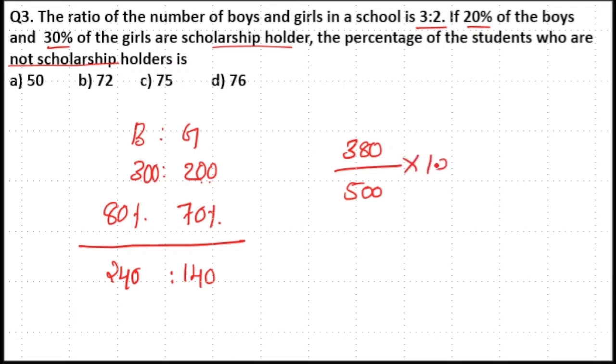So if you take the percentage into 100, that means the zeros cancel. 380 by 5, means 5 into 7 is 35, 30 by 5 is equal to 6, that is 76 percentage. So option D is your answer.